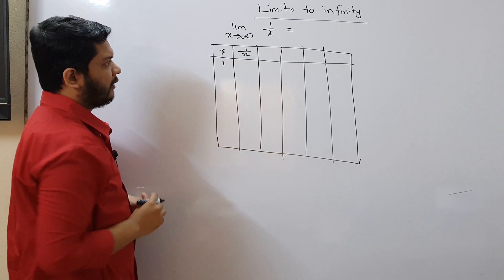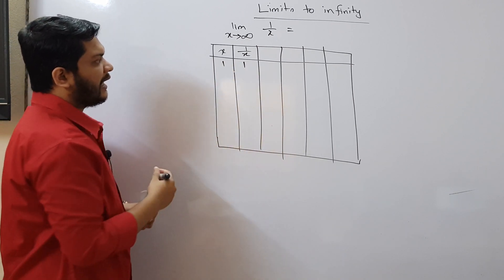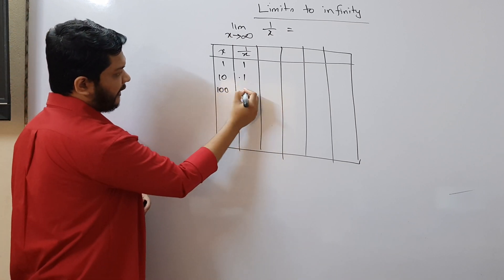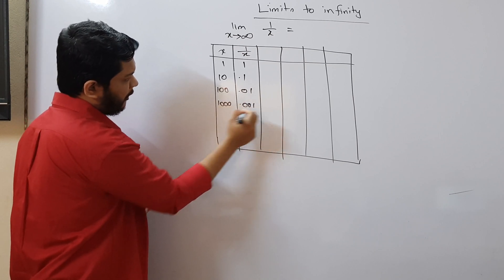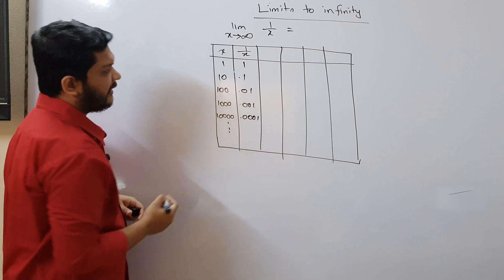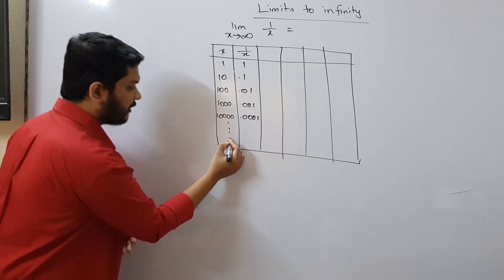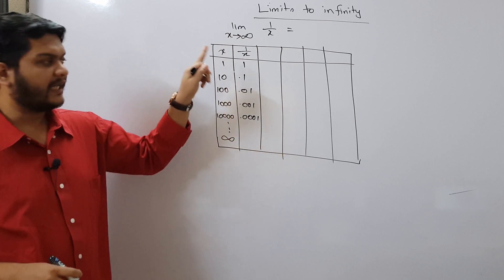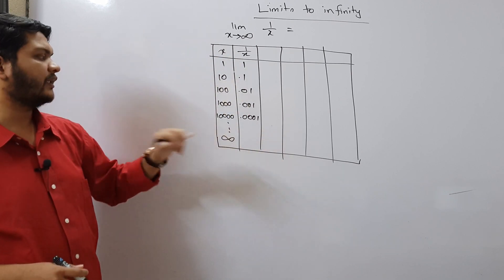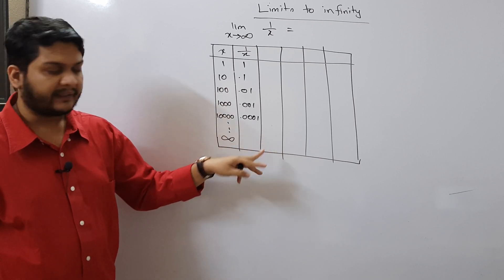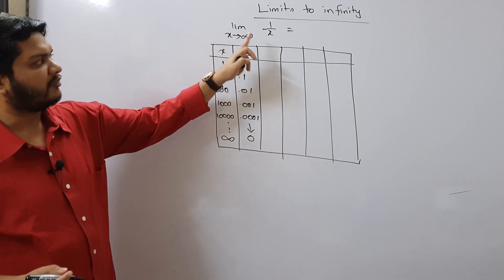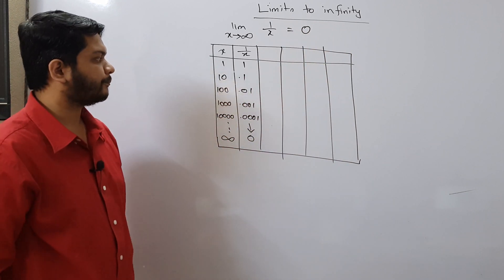For x equals 1, we get 1 divided by 1, which is 1. For x equals 10, we get 0.1. For x equals 100, we get 0.01. For x equals 1000, we get 0.001. We can see that as x increases towards positive infinity, the expression 1 divided by x is decreasing — from 1 down to 0.1, 0.01, 0.001 — and it is moving towards 0. So limit x tends to infinity of 1 divided by x equals 0.